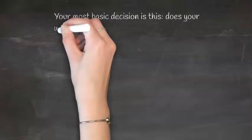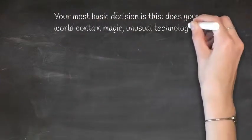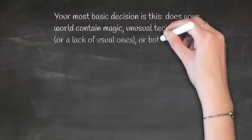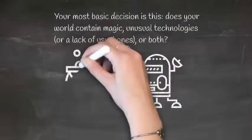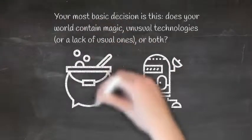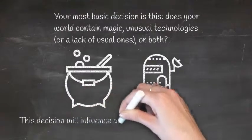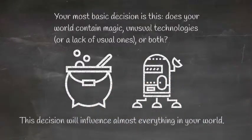Your most basic decision is this: Does your world contain magic, unusual technologies, or lack of usual ones, or both? This decision will influence almost everything in your world.